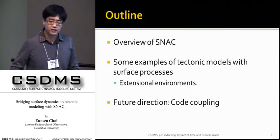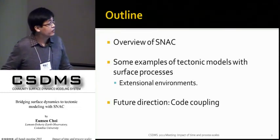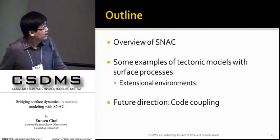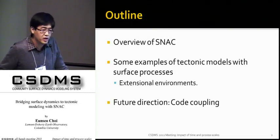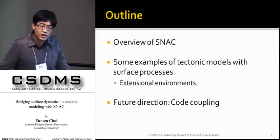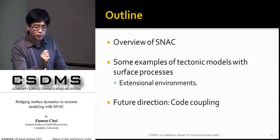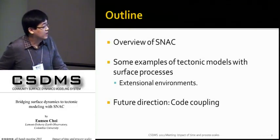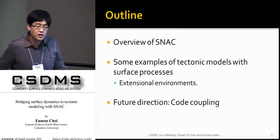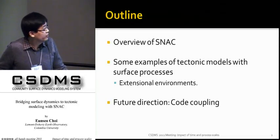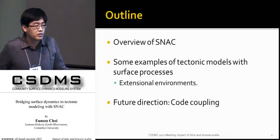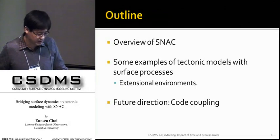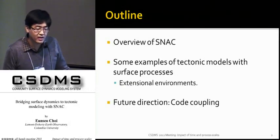Here's the outline of my talk. First, I'll give you an overview of the code SNAC, and then I'll give you some examples of tectonic models with surface processes included. Assuming that you are all familiar with erosion in an orogenic environment, I chose a couple of examples from extensional environments. And at the end, I'll give you a quick preview of an ongoing project that is trying to couple one surface modeling code with a tectonic modeling code, and I'll discuss how SNAC can fit into that project.